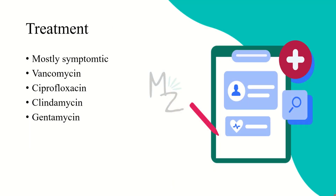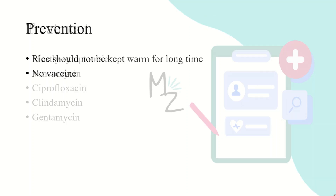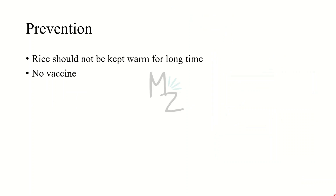Treatment: mostly symptomatic treatment is given for infections caused by Bacillus cereus. However, vancomycin, ciprofloxacin, clindamycin, and gentamicin can also be used. Prevention: rice should not be kept warm for long hours due to heat-stable bacteria. There is no vaccine available to prevent infections caused by Bacillus cereus.